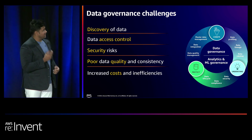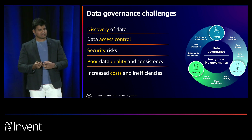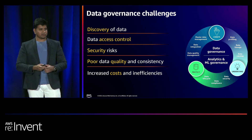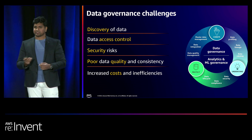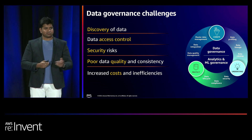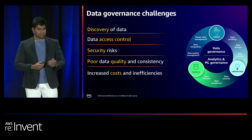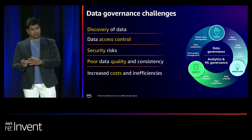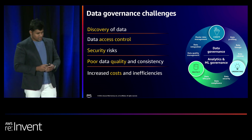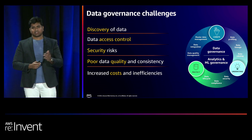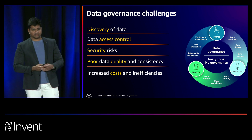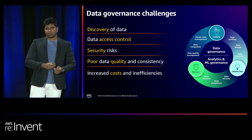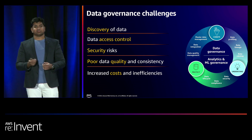Historically, data governance is seen as a lockdown measure — locking data in silos where you can't innovate. But in reality, with proper data governance, you should be able to move data freely across your organization. Since data is spread across different teams and accounts, it is very hard to discover. You may have manual mechanisms for access control that can't scale. Poor data governance means increased security risk due to lack of audit control — if there is a breach, it would be hard to mitigate. And poor data quality leads to inconsistent decision-making across your organization.